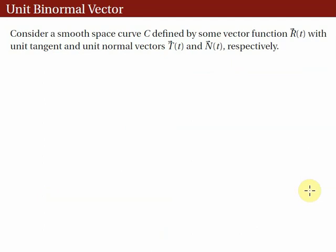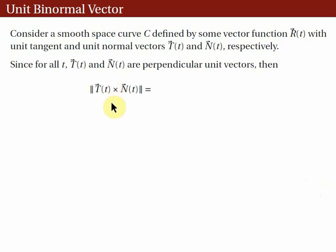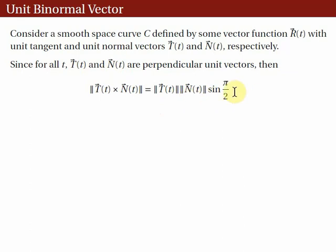Next, consider a smooth space curve C defined by r(t) with unit tangent T(t) and unit normal N(t). Let's look at the norm of the cross product of T and N. From a previous lecture, this equals ||T|| · ||N|| · sin θ, where θ is the angle between the two vectors. Since T and N are perpendicular, θ = π/2. Since T and N are unit vectors, their norms equal 1, and sin(π/2) = 1, so the norm of the cross product equals 1.